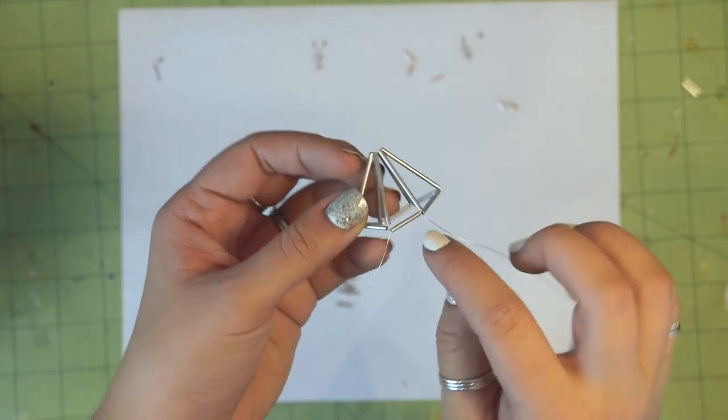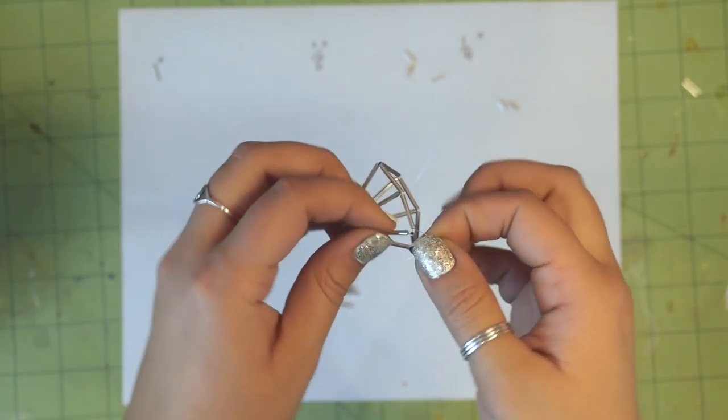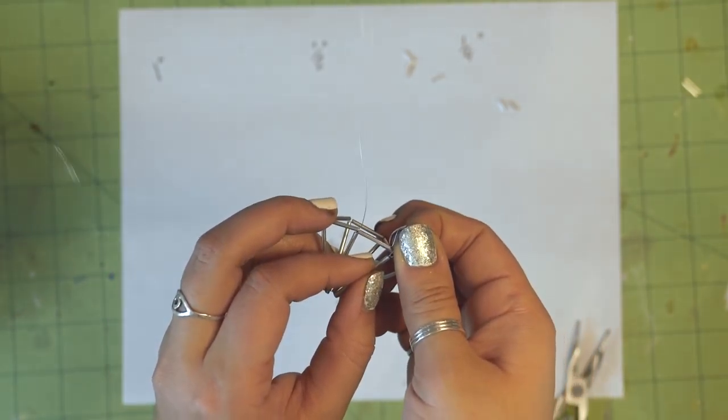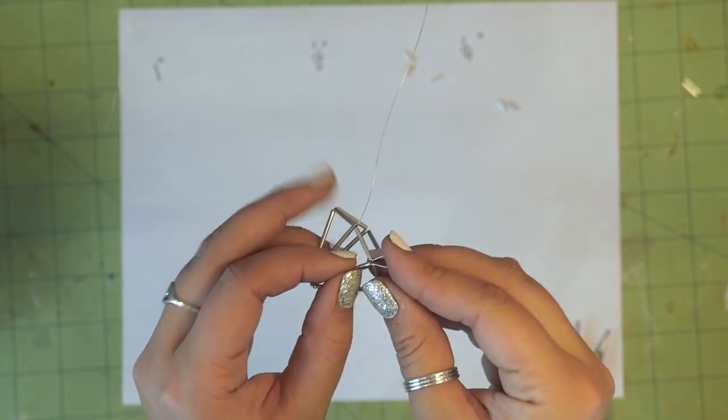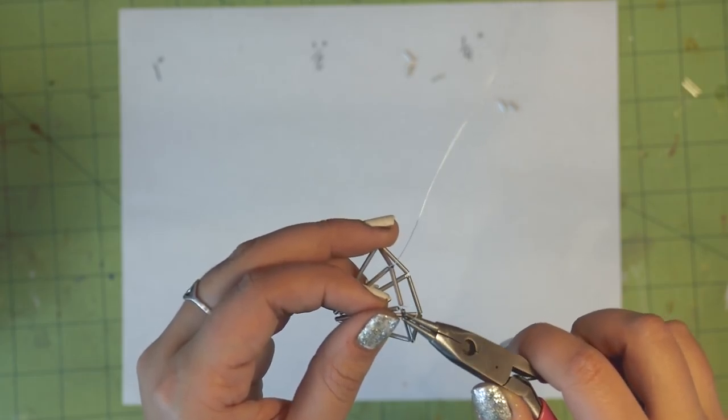By now, the wire should be shorter than an inch. If not, then trim it down to about half an inch to 3/4 of an inch. And then stick it into the 1 inch tube nearest to it. Use the pliers to help you get it completely in the tube.